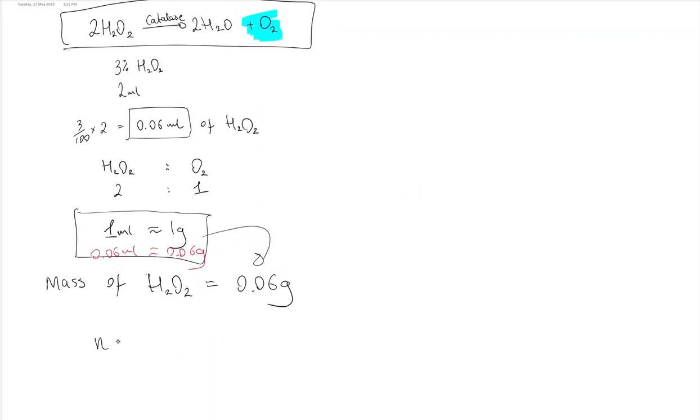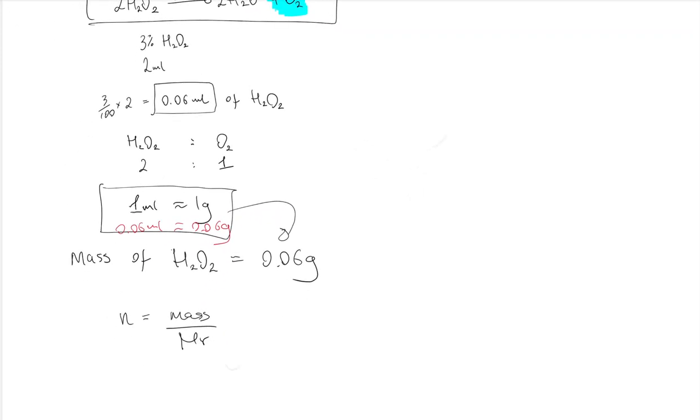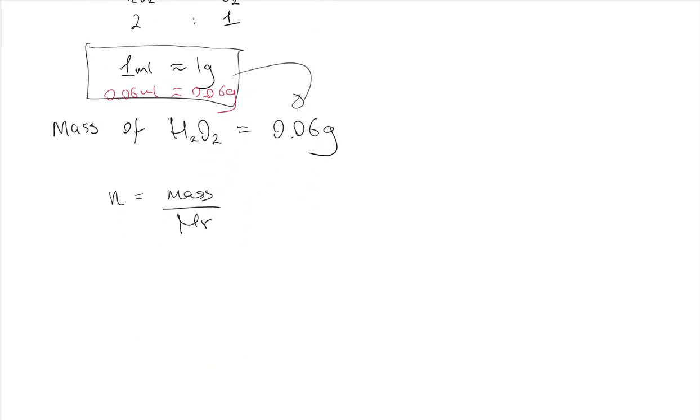Now the number of moles n is mass over molar mass. The mass is 0.06, but the molar mass of hydrogen peroxide, in the periodic table hydrogen is 1, oxygen is 16. So there are two of hydrogen, so 2 plus 16 times 2 is 32. So the molar mass is 34 grams per mole.